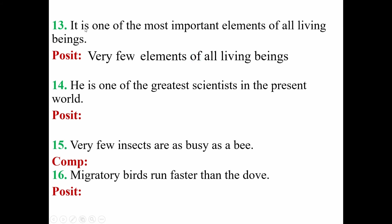'It is one of the greatest scientists of all.' This is superlative degree — change into positive. As we find 'one of the,' start the sentence with 'very few.' The next part of the adjective: 'scientists.' After 'very few,' use plural number and plural verb — 'are.' As the positive form of 'greatest' is 'great,' write 'as great as,' then the given subject 'it.'